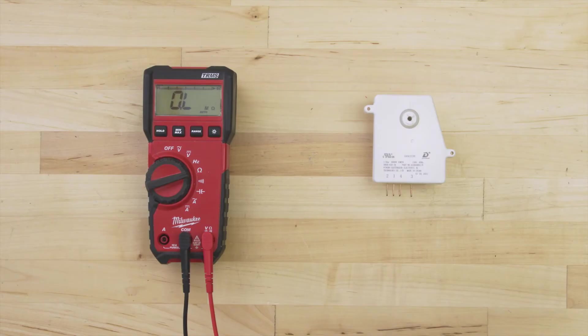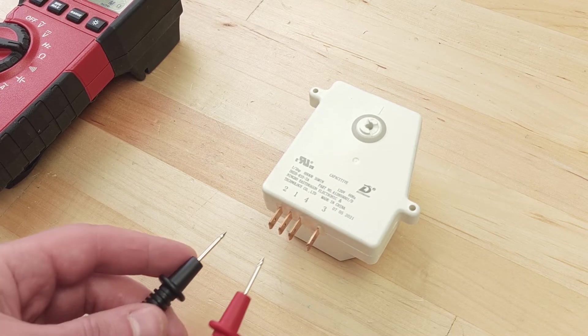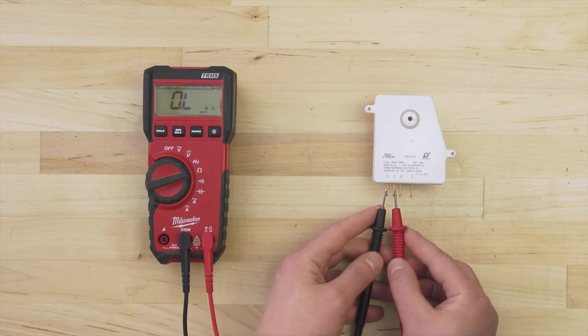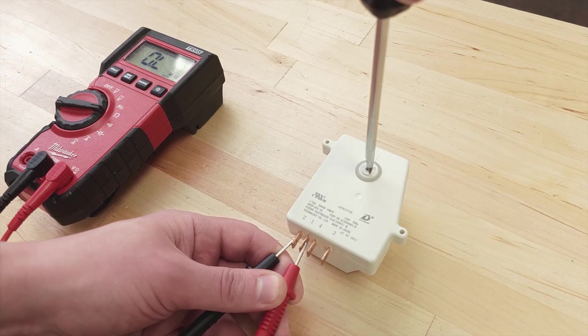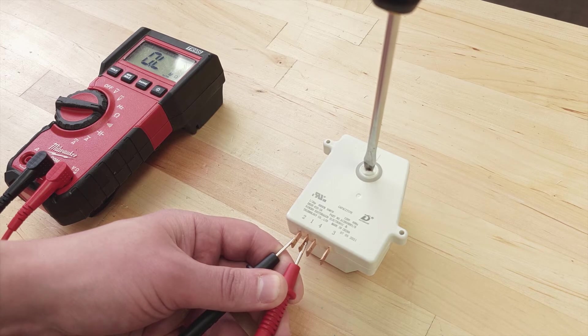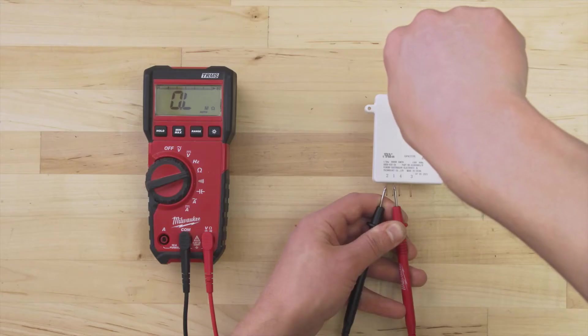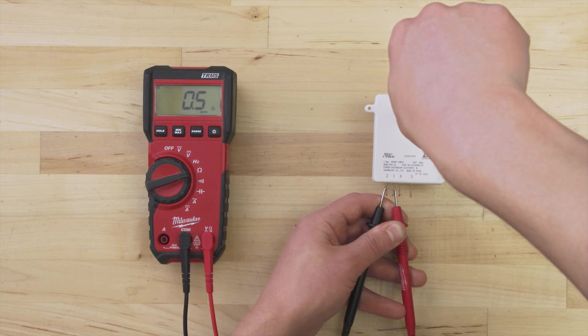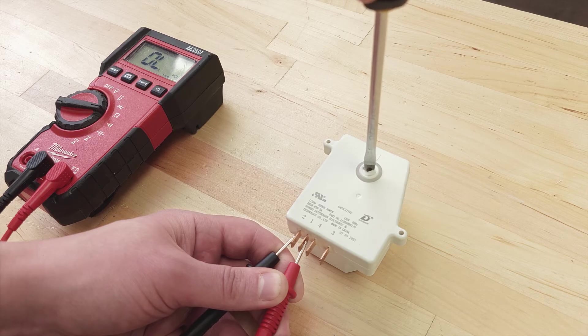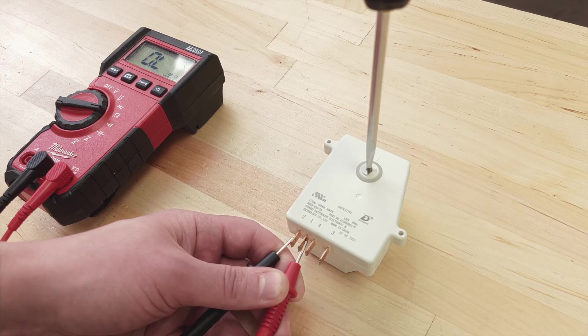Set your multimeter to the continuity or resistance setting. To test the defrost mode, check terminals 1 and 2. Depending on where the cam is set, you should have no reading and no continuity. Now turn the advancement screw clockwise. You should hear a click when it switches to the defrost mode. When it clicks, there should be continuity. This will verify that the defrost circuit can be energized. Turn the screw until it clicks again. This will disconnect the terminals and there should be no continuity.